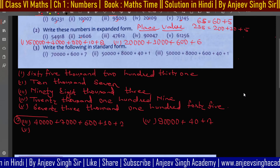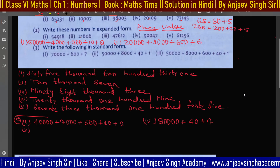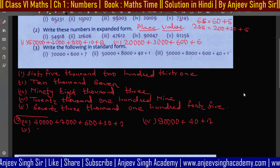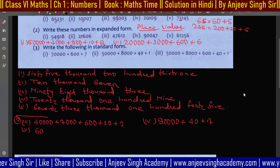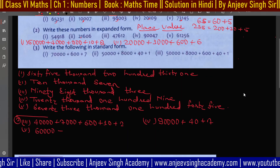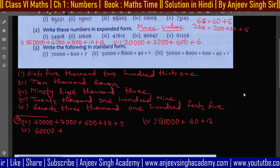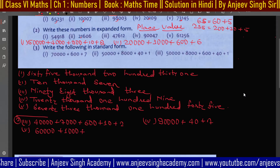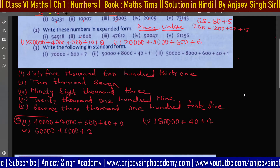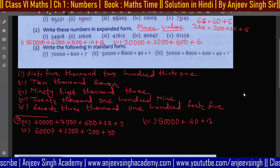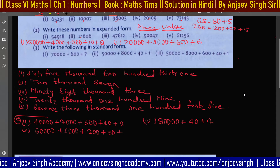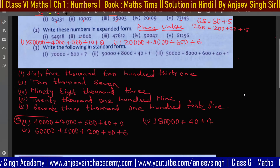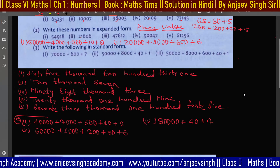The next question: 90,047 — so we write 90,000 + 40 + 7. Very good! And the last question, number 5: 61,256 — expanded form is 60,000 + 1,000 + 200 + 50 + 6. So this is how you solve question number 2.